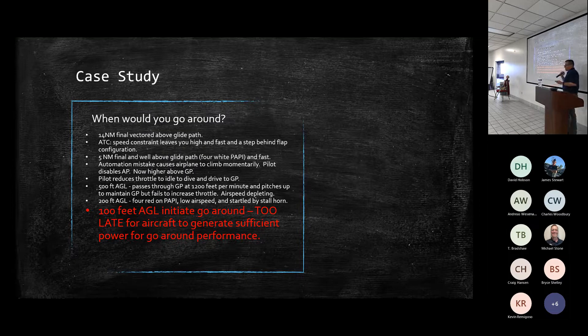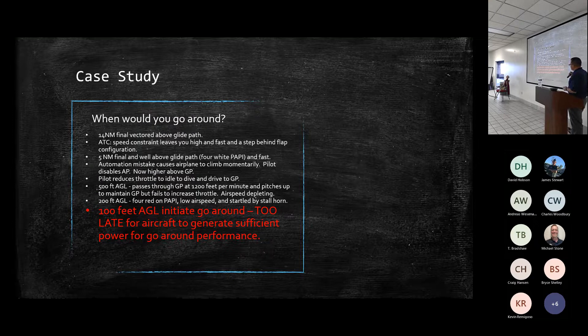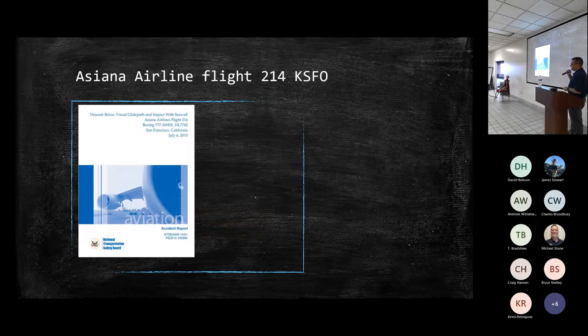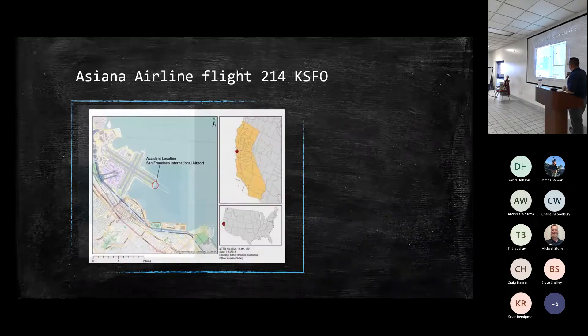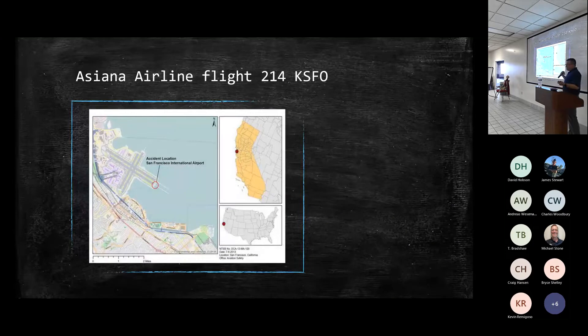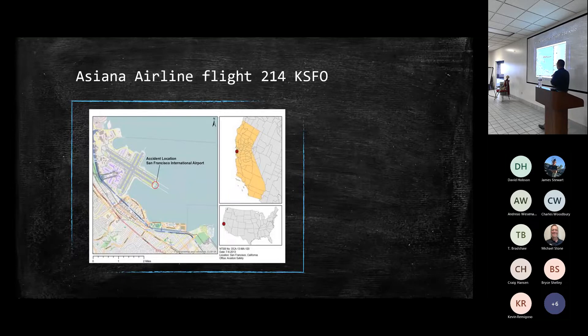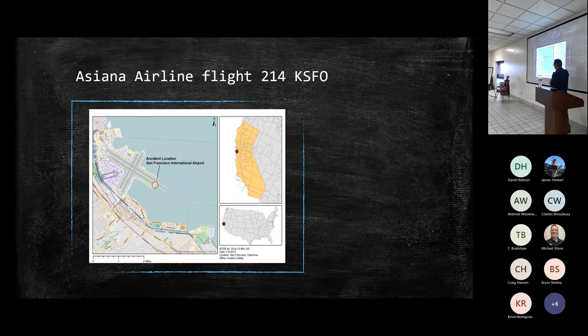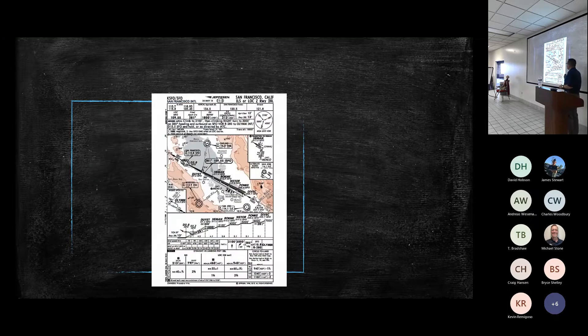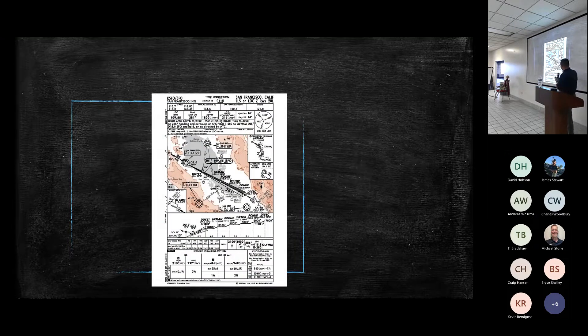All right. So I do want you thinking about this through a general aviation mindset. But this is exactly what happened with Asiana, San Francisco. So ultimately, VMC conditions, visual, they used an instrument to back it up. They're coming in here to land two eight left, coming over the bay. And I won't bore those of you who don't have an instrument rating to walk through it. But ultimately, they're trying to come through the glide path. They were high above it. They got vectored on.